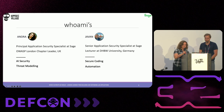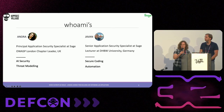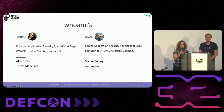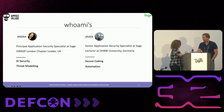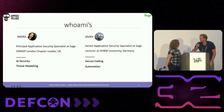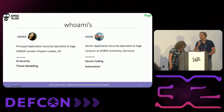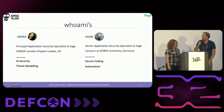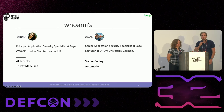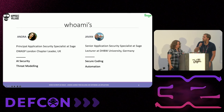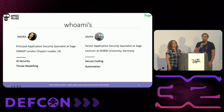This is us. My name is Andra. I'm a principal AppSec engineer at Sage and also one of the three OWASP chapter leads for London. I'm Javan, working in the same team as Andra at Sage, supporting our software engineering security development lifecycle. On the side, I'm teaching secure coding at DHBW University in Germany.